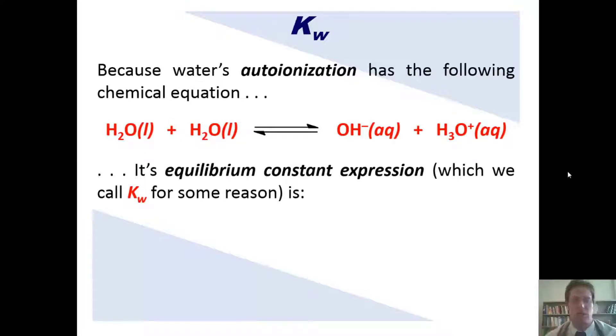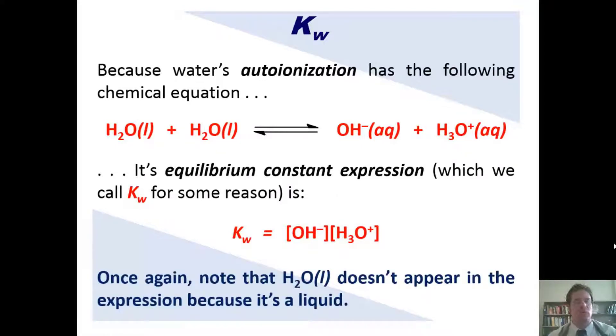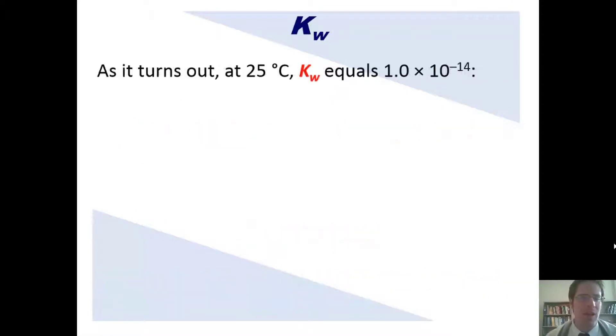Because water's autoionization has the following chemical equation, its equilibrium constant expression, which we call kW for some reason because we want to have as many different and confusing kinds of k's as possible, is this. You'll notice that water H2O liquid does not appear in this expression anywhere because it's a liquid. Liquids and solids are omitted from equilibrium constant expressions.